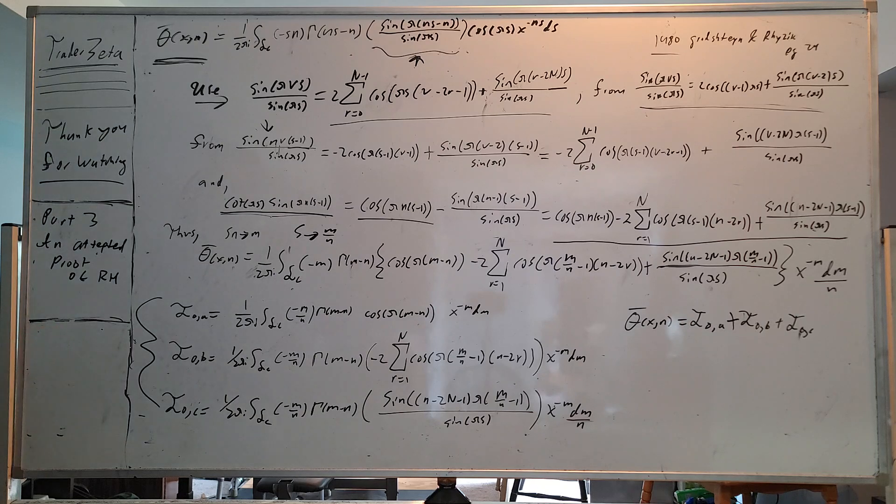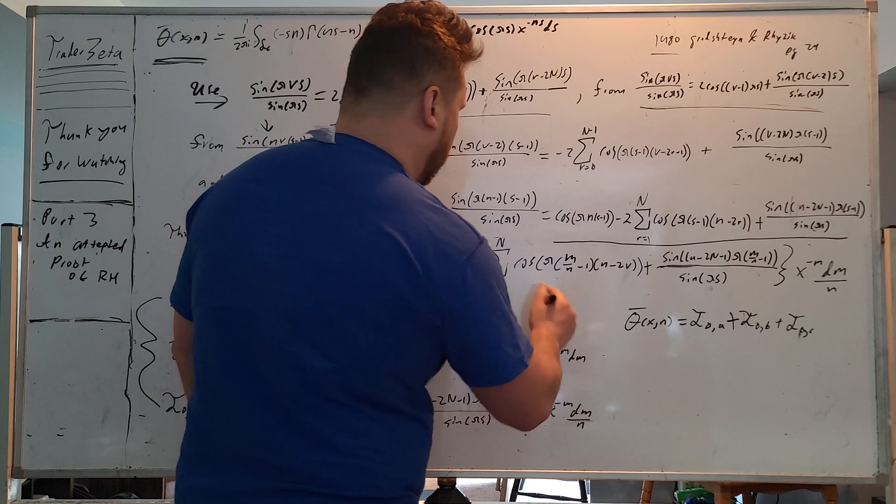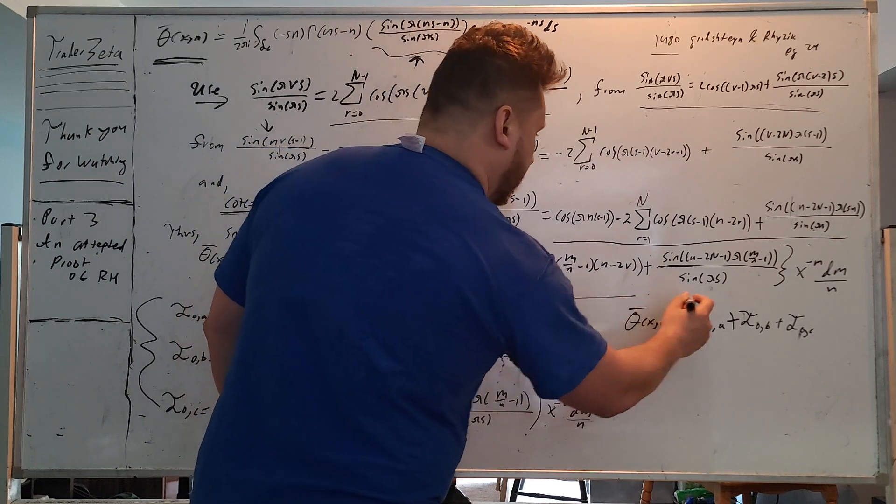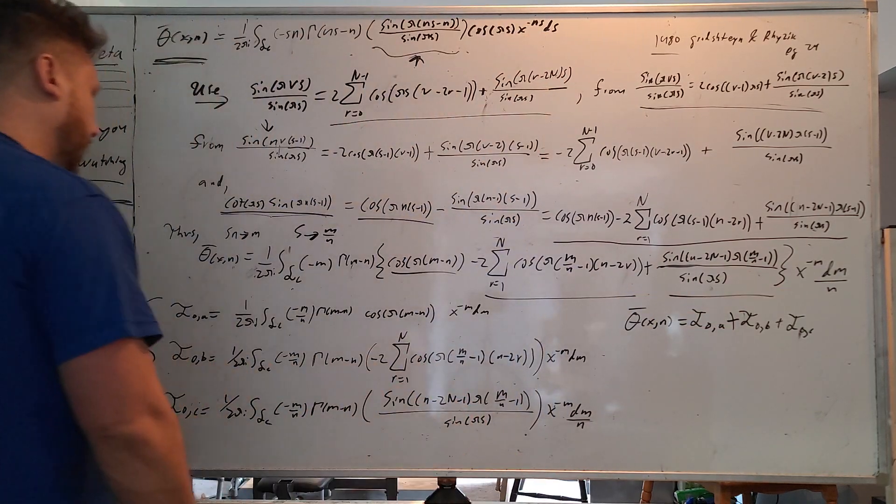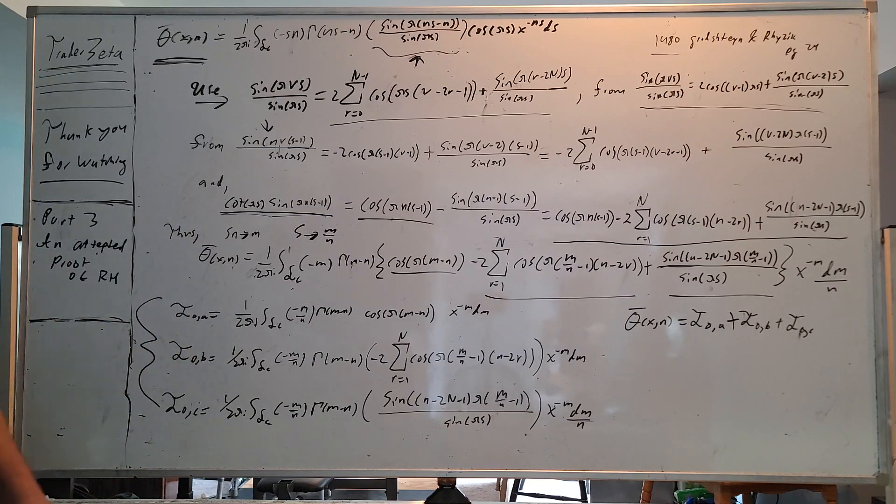So now we have three integrals. We have this one right here, this one right here, and this one right here. And we can denote them as i sub zero comma a, i sub zero comma b, and so on and so forth. And I think this is going to be really useful.